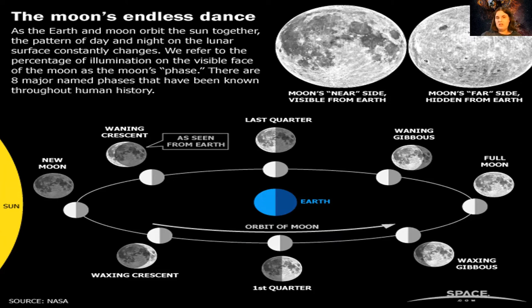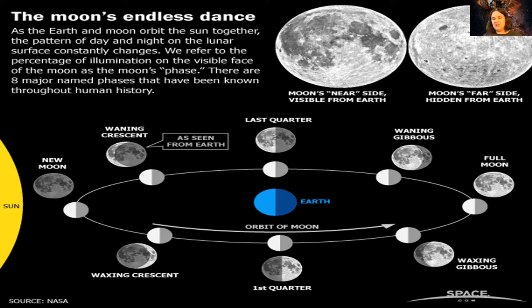The moon is in what is known as a synchronous orbit, or it's tidally locked, meaning one side of the moon always faces the Earth. It rotates at the same rate it revolves, so as it goes around the Earth, it slightly turns so that always one side faces us — the side with the beautiful features like the man in the moon. Those dark areas you see on the surface are called maria, the Latin term for seas, because ancient mariners thought there were oceans on the moon.